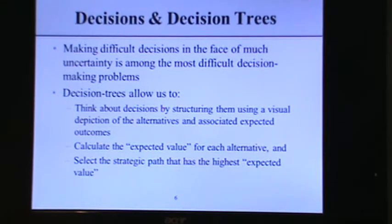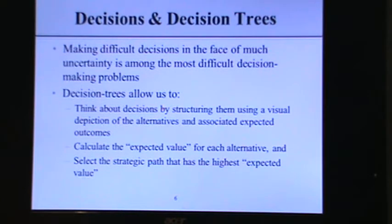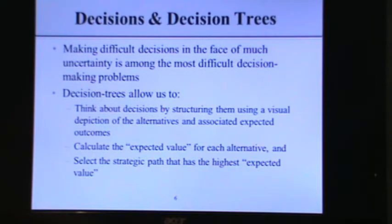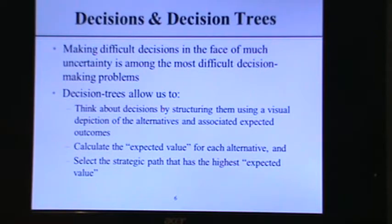Decision trees: making difficult decisions in the face of uncertainty is some of the hardest decision-making we know. Decision trees allow us to structure our decisions and payoff tables visually — with little branches and spokes — so we can understand the decision path. They also enable us to calculate an expected value just like we did in the EMV problem, and the decision tree tools calculate the values for you and let us select the path with the highest expected value.